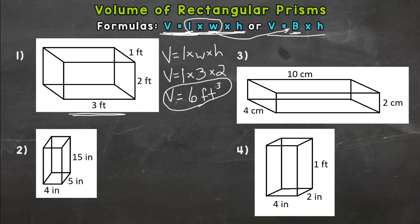Now let's go to number two here. Write out our formula. Volume equals length times width times height. Plug in. Length going back is five. Our width is four. And our height is 15.